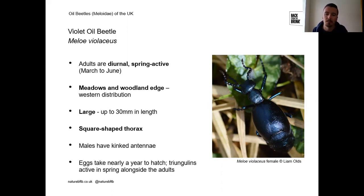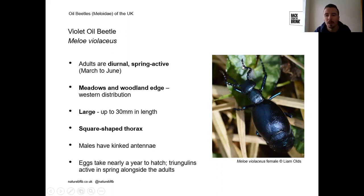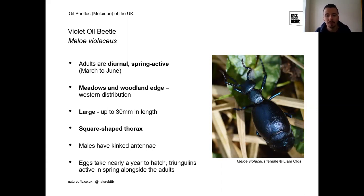Males have strongly kinked antennae — in this image of a male, the right antenna bends very obviously because one segment is a different shape. This makes sexing black and violet oil beetles easy: a really obvious bend indicates a male, a slight bend indicates a female. Notably, violet oil beetle eggs laid in spring take nearly a year to hatch, so triunglids seen alongside spring adults were actually produced by the previous generation.